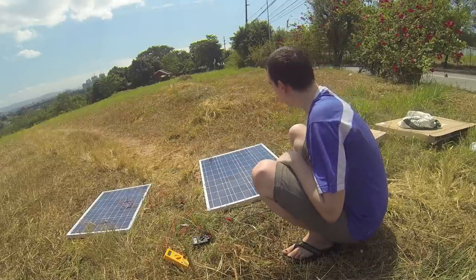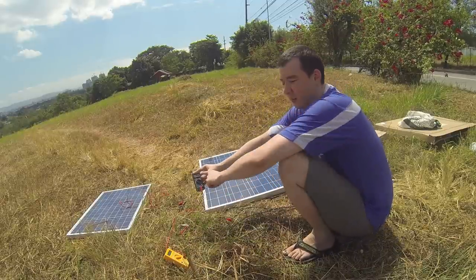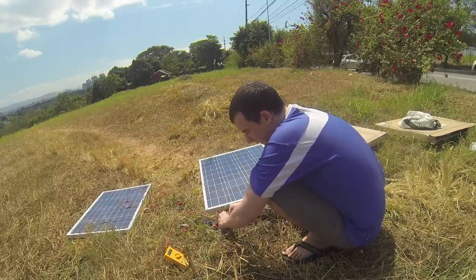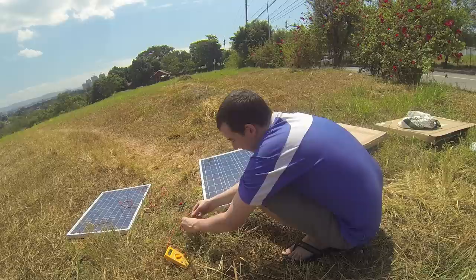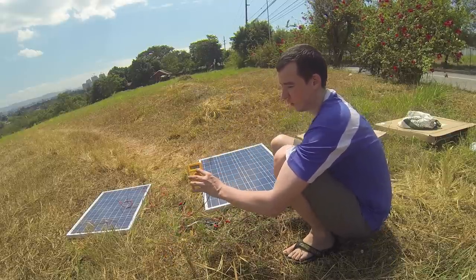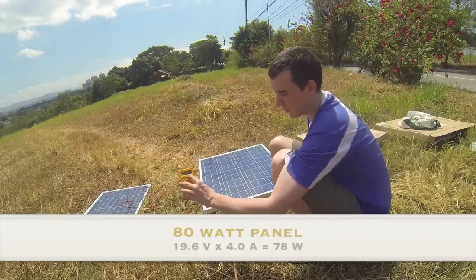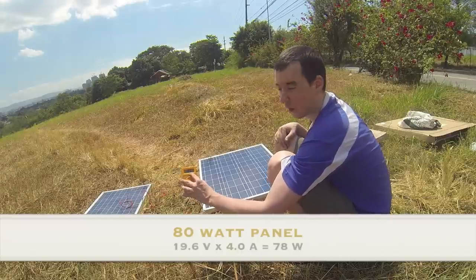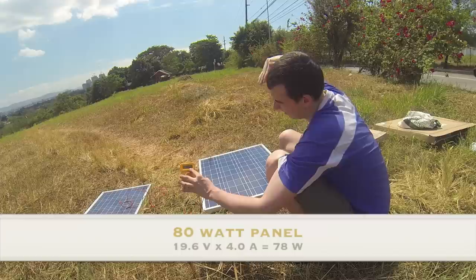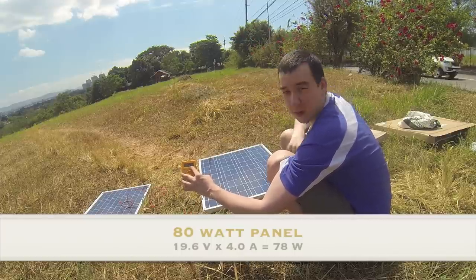Okay, now let's measure the output of the 80 watt panel. You'll see the voltage is 19.6 and it's putting out around 4 amps. 3.7. The sun has just gone behind the clouds. It's dropped down a bit, 3.5. It was at 4. I'm sure it would go a little bit higher once the sun comes out from that cloud.